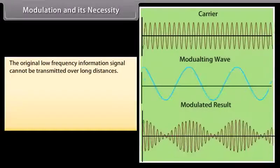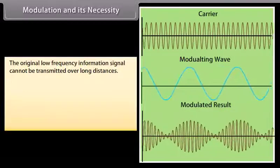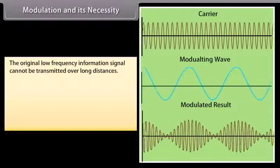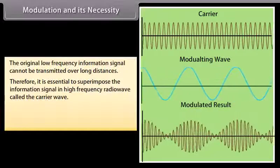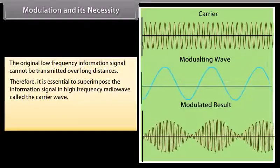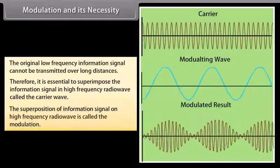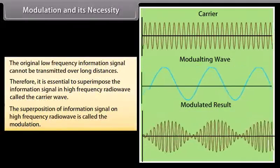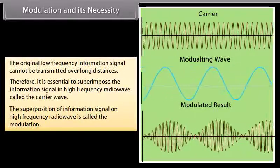Modulation and its necessity. The original low-frequency information signal cannot be transmitted over long distances. Therefore, it is essential to superimpose the information signal on a high-frequency radio wave called the carrier wave. The superposition of an information signal on a high-frequency radio wave is called modulation.